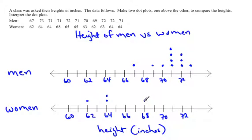Then there's a 68, 65, another 65, 63, 62, another 63, another 64, and a 64.